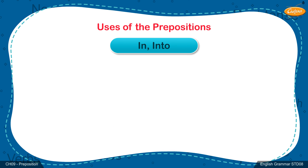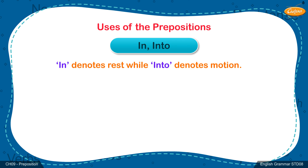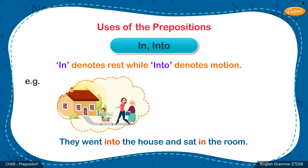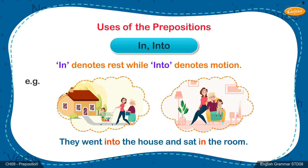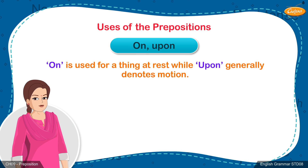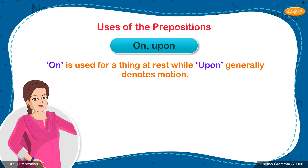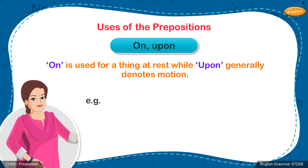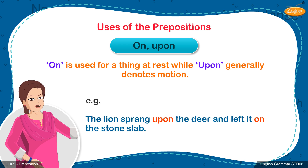In vs Into: 'In' denotes rest while 'into' denotes motion. Example: They went into the house and sat in the room. On vs Upon: 'On' is used for a thing at rest, while 'upon' generally denotes motion. Example: The lion sprang upon the deer and left it on the stone slab.